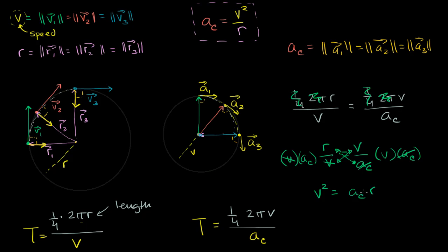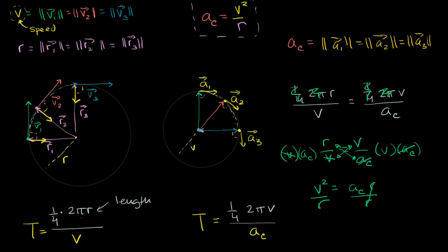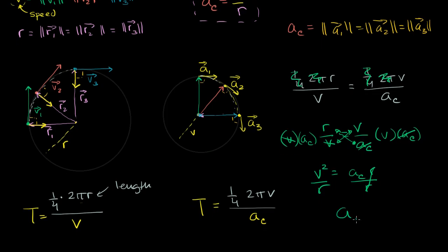To solve for the magnitude of our centripetal acceleration, we divide both sides by r. And we are left with — the magnitude of our centripetal acceleration is equal to our constant speed squared divided by the radius of the circle. And we're done.